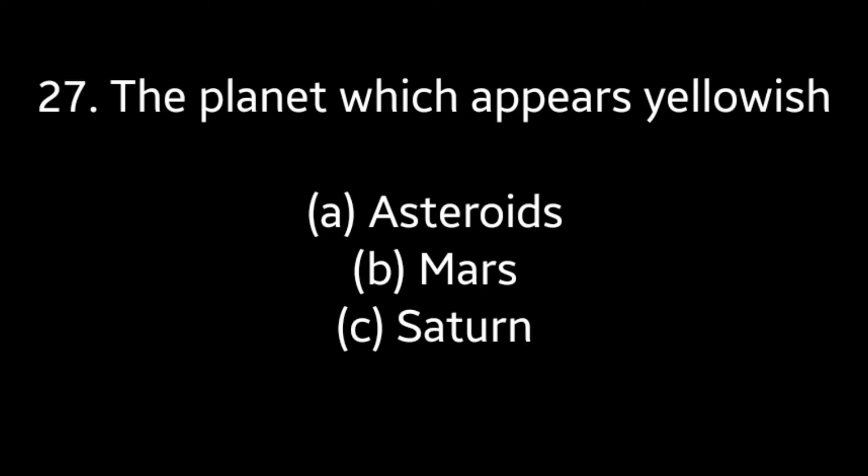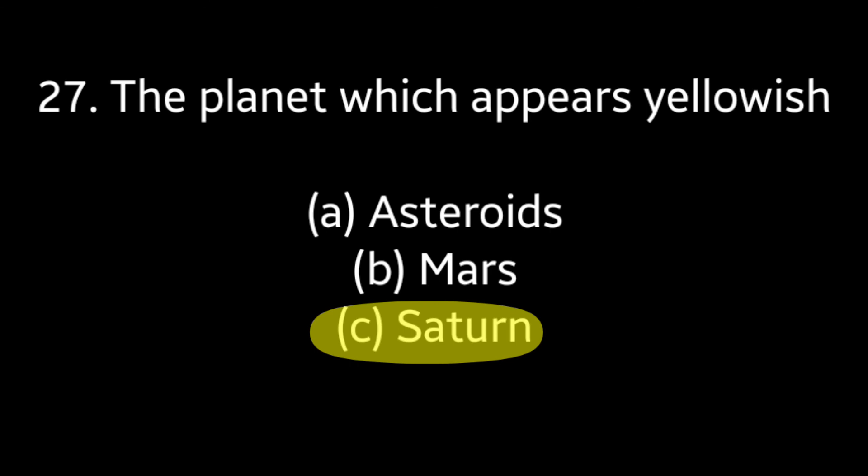Question number 27: The planet which appears yellowish. Options: Asteroids, Mars, Saturn. Answer is option C — Saturn.